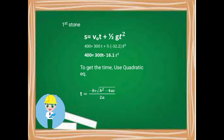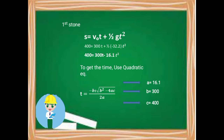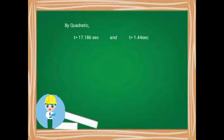The quadratic formula is t = (−b ± √(b² − 4ac)) / 2a, where a = 16.1, b = 300, and c = 400. Solving by quadratic equation, we get two values: t = 17.186 seconds and t = 1.44 seconds. In this situation, we use the maximum time value, which is t = 17.186 seconds.